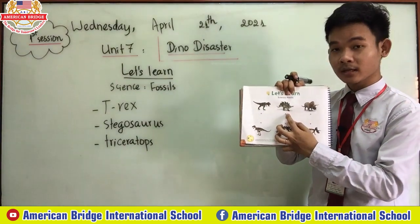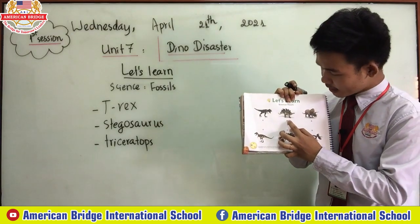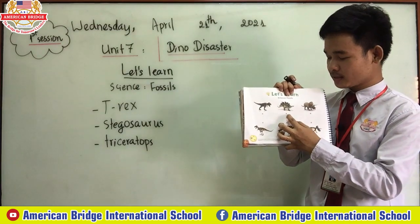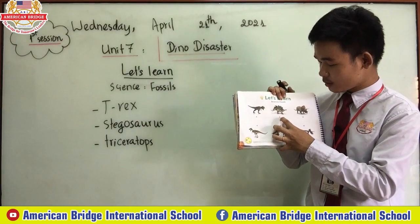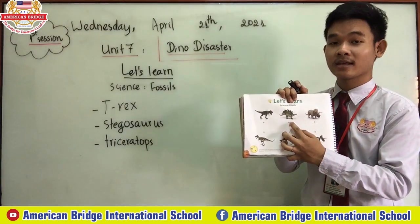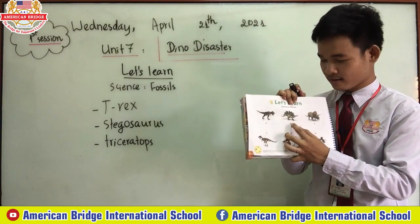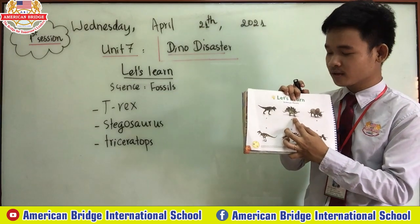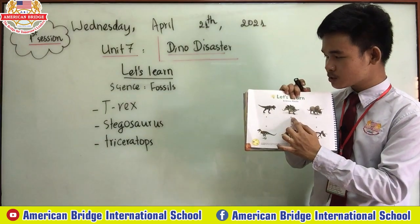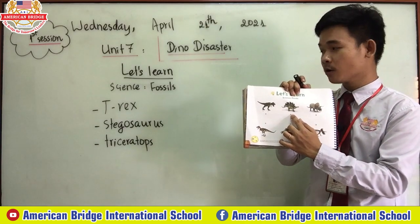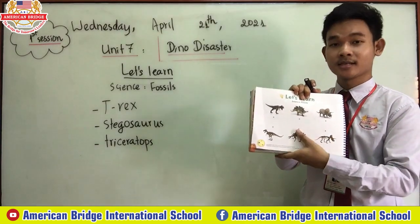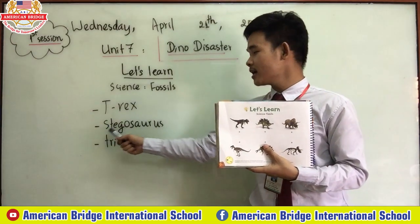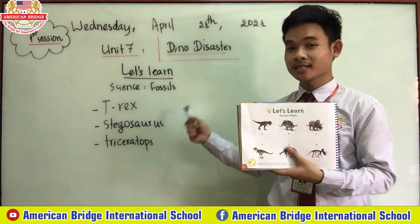And this one has a short tail and also short legs, and its head is small in comparison to T-Rex. So this one we call Stegoceros.